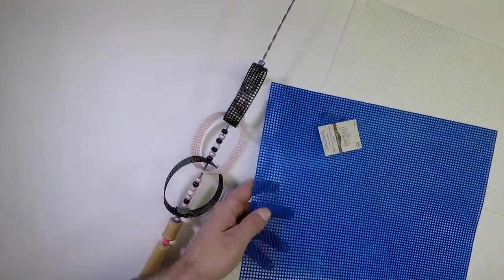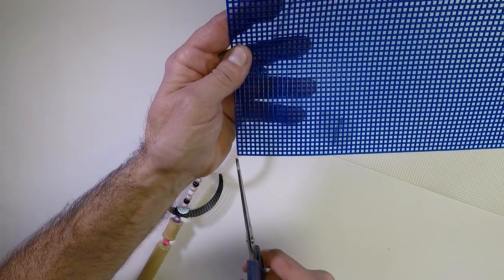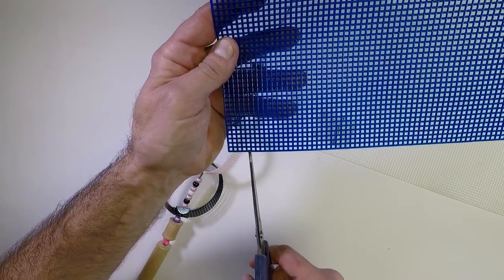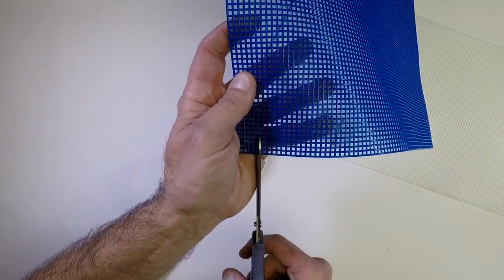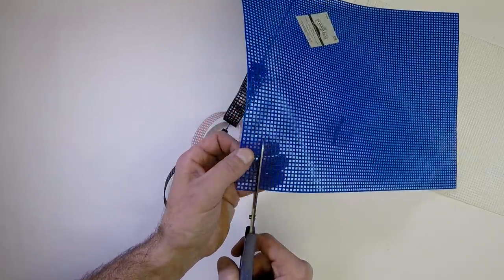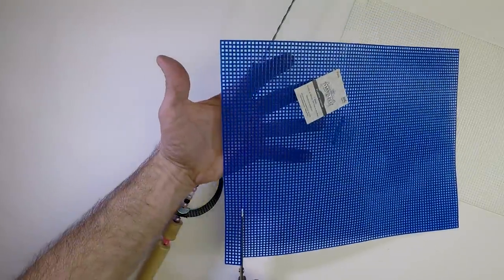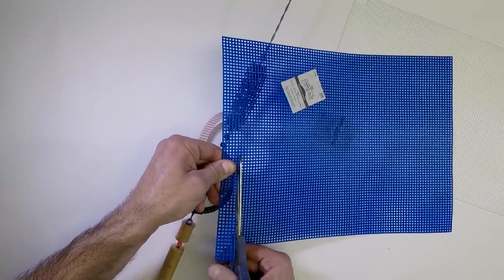Now, in order to make our loops, we're going to take our plastic canvas and count five holes. One, two, three, four, five. And then we're going to cut just on the right side of that, all the way across from end to end. That's going to be the length for the one loop.